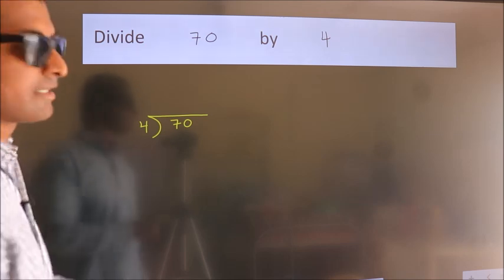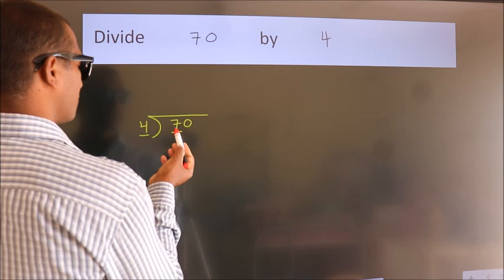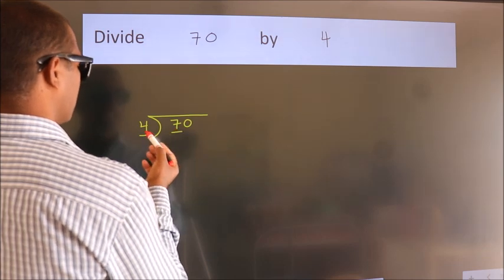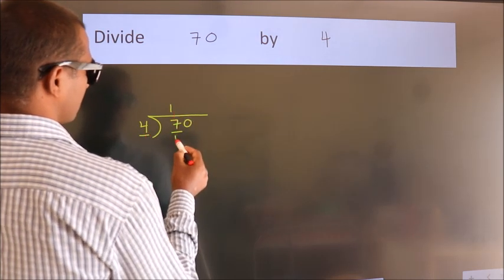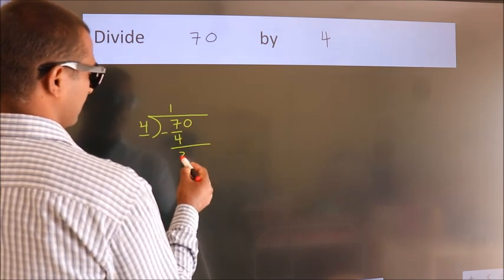Next, here we have 7, here 4. A number close to 7 in 4 table is 4 once 4. Now, we should subtract. We get 3.